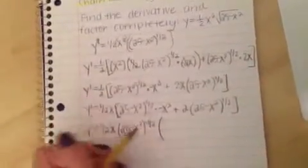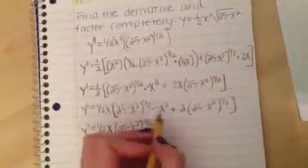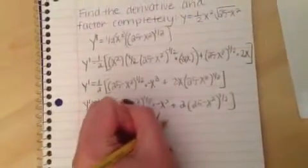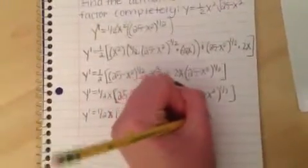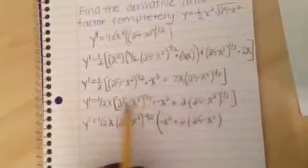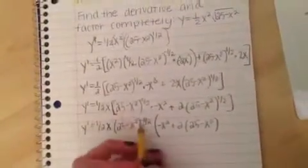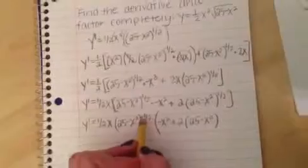So this is all being multiplied by this, so this will become negative x squared plus 2, 25 minus x squared. And since these two are being multiplied, you add the exponents, and then the negative one-half plus a half becomes one, so there's no exponent left.